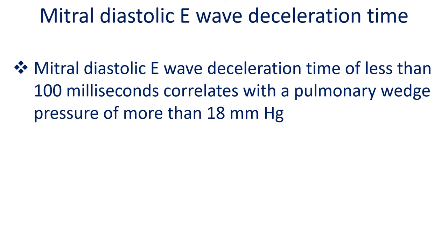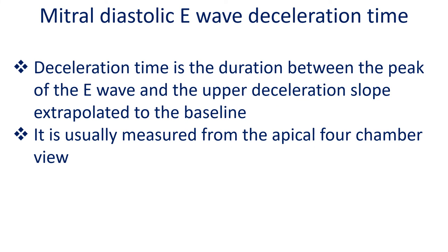Mitral diastolic E wave deceleration time of less than 100 ms correlates with a pulmonary wedge pressure of more than 18 mmHg. Deceleration time is the duration between the peak of the E wave and the upper deceleration slope extrapolated to the baseline.